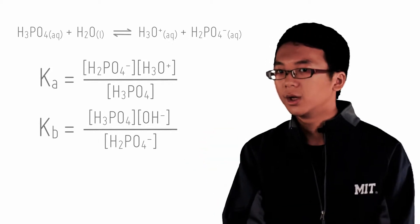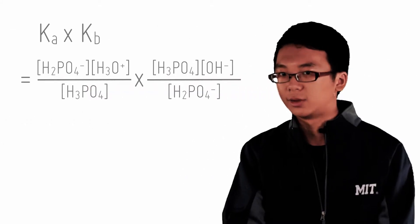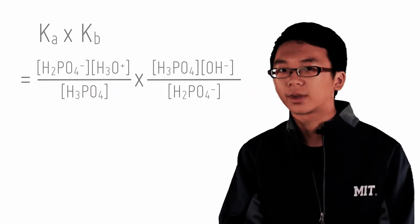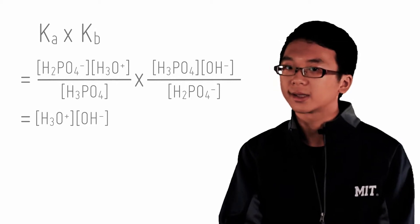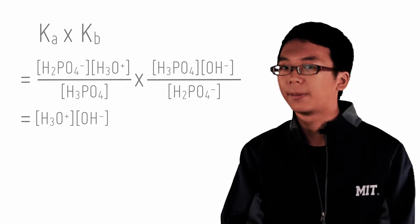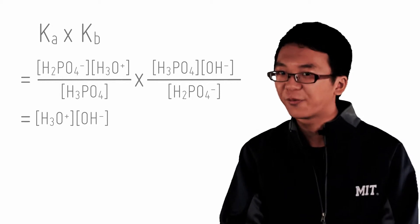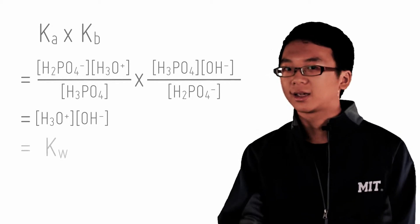Now notice something about these two. Let's multiply them together and see what happens. Both the acid and the conjugate base concentrations cancel out, and that leaves us only with hydronium multiplied by hydroxide, which you might have seen somewhere before. Yes, that's right. It is Kw.